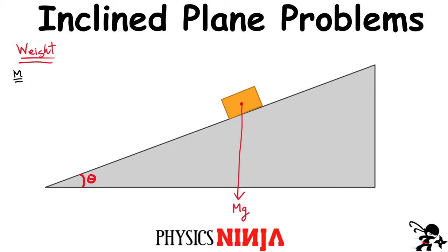Another force that acts on the block is the normal force. In mathematics, the word 'normal' simply means perpendicular to the surface. So perpendicular to the surface — in this case, this is the surface where the block is resting — the normal force points perpendicular to it, and I'm going to call this N. We see right away we have a problem: we have forces that are not in the same direction, and the weight is at an angle relative to the normal. So it's a little bit harder.